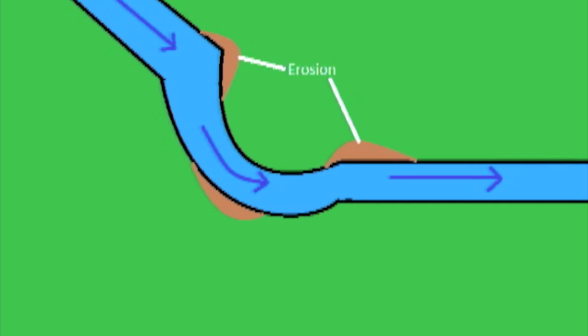The faster water erodes the outside of the bends, and there is deposition on the inside. This makes the meander get more wiggly.